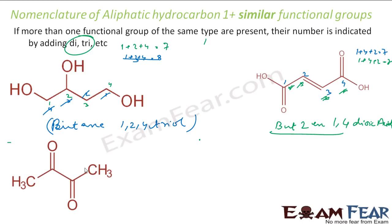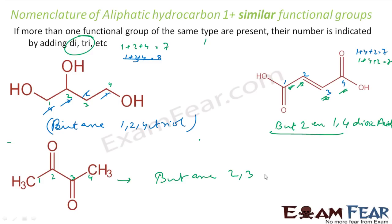Let's take this next compound. I can name it 1, 2, 3, 4 or the reverse — both give positions 2 and 3, so either way is the same. No prefix since there is no branch. Four carbons so BUT, all single bonds so butane. At the second and third positions I have ketone groups — so 2,3-dione. The name is butane-2,3-dione.